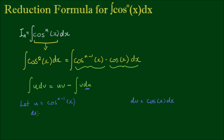We write du equals: taking the derivative of cosine to the n-1, we have n-1 times cosine to the n-2 — bringing the power down and subtracting 1 — then multiplying by the derivative of cosine x, which is negative sine x. This applies the chain rule, and we complete that by writing dx on the end.